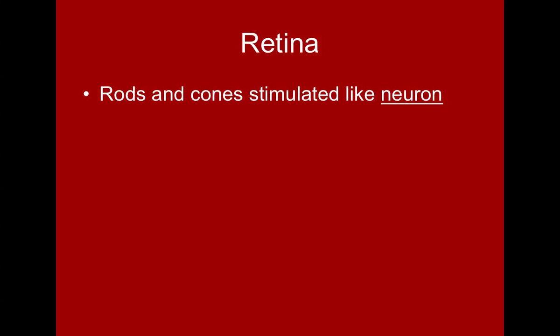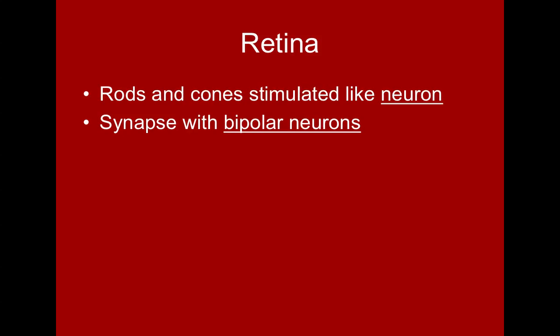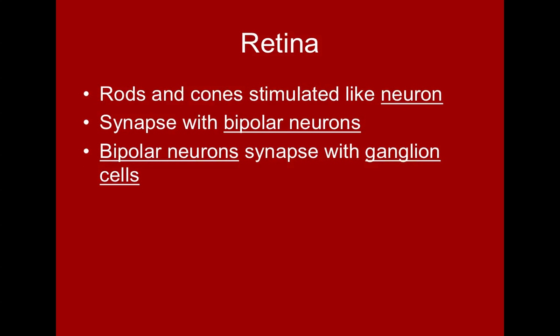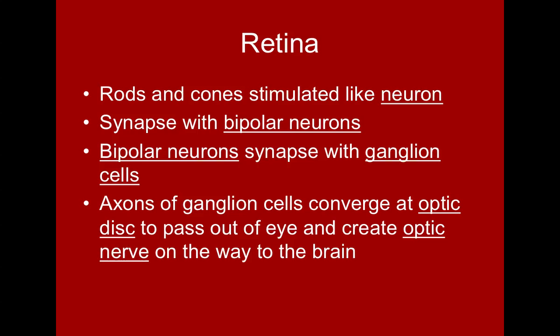Within the retina, cones and rods are stimulated similarly to a neuron. Light comes in, stimulates the opsin protein, and triggers an action potential in the rod or cone. They then synapse with a bipolar neuron, which synapses with ganglion cells. The ganglion cell axons run along the inner surface of the retina, converge at the optic disc, and pass out of the eye to create the optic nerve that goes on to the brain.